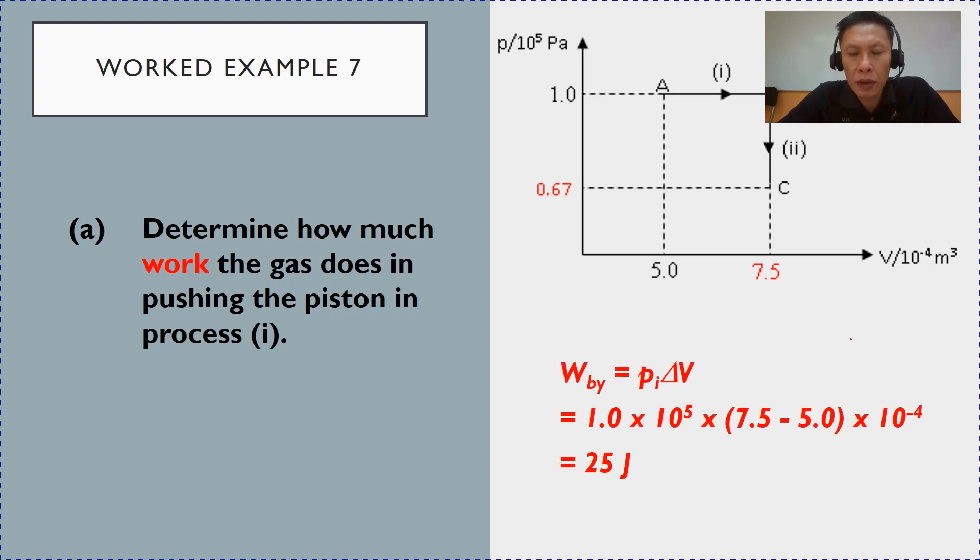Work done by, not on, work done by is P delta V. So, you take the pressure from the graph, it is 1 times 10^5. Multiply it with the change in volume. So, final minus initial, 7.5 minus 5. So, that gives you 25 Joules. This, we will make use of this data later. So, this is the work done by the gas for process 1, is 25 Joules.